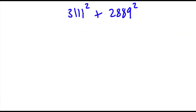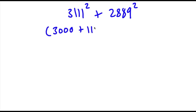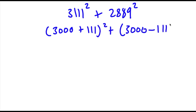Alright, so now the bonus problem: I have 3,111 squared plus 2,889 squared. The first thing I'm going to do is rewrite this as (3,000 plus 111) squared plus (3,000 minus 111) squared.